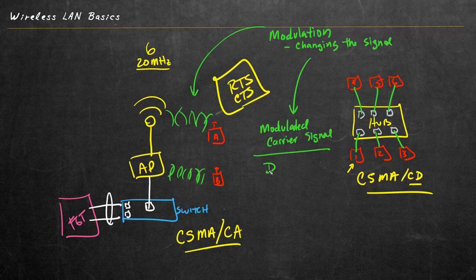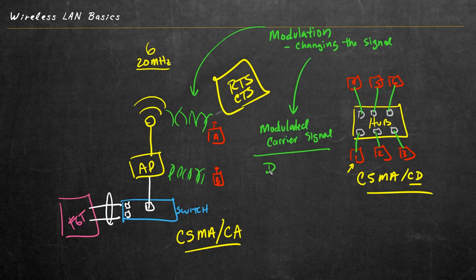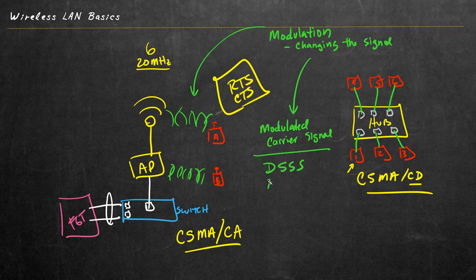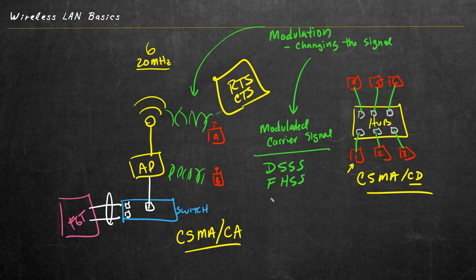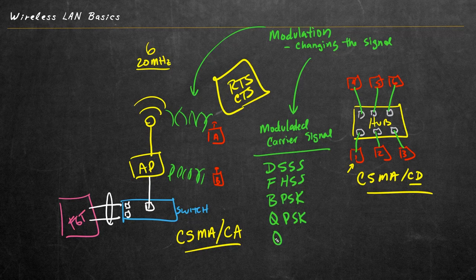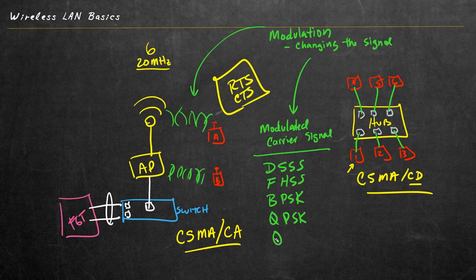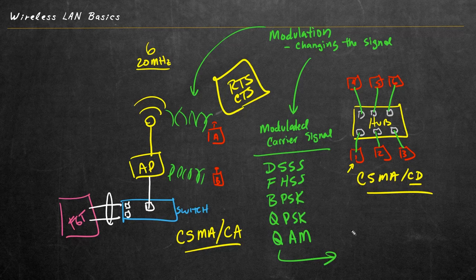And as an example of a few options, we have DSSS, which is direct sequence spread spectrum. There's also an option called FHSS for frequency hopping spread spectrum. There's also an option called BPSK, which is binary phase shift keying. There's one called QPSK, which is quad phase shift keying. There's also QAM, which is quad amplitude modulation. And when I say quad, that's actually a shortcut way of saying quadrature. But because that's a huge big word, I like just saying quad instead.